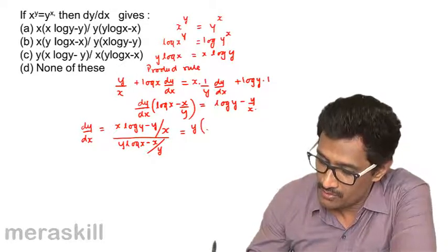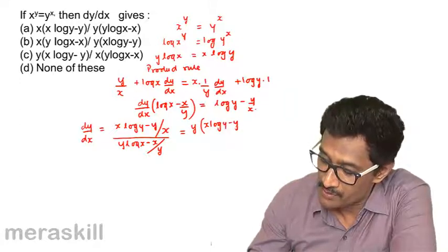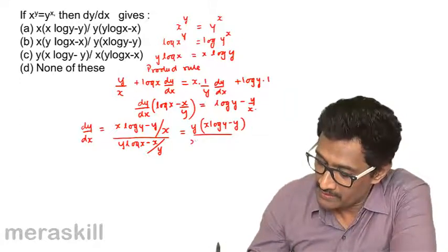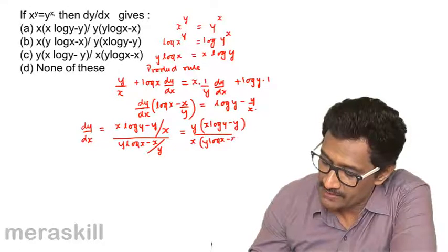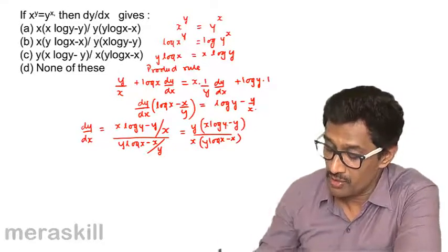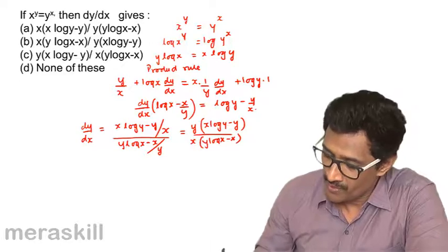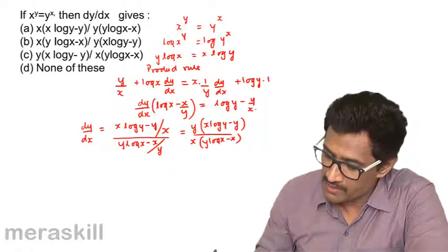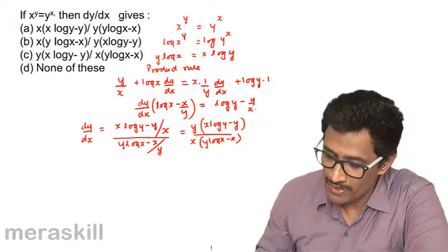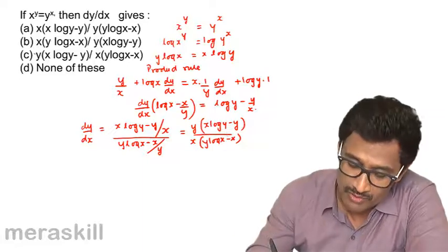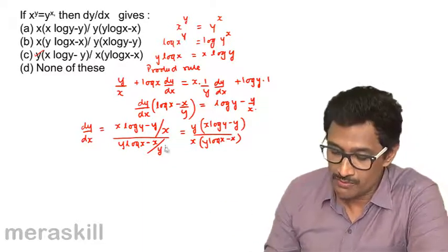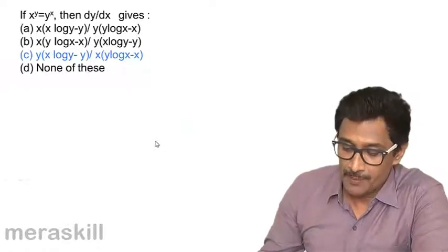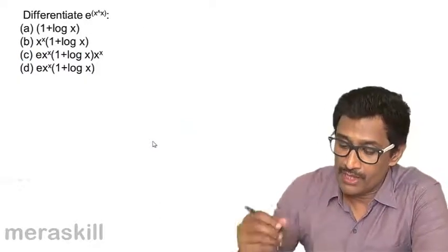Simplifying further, y goes to the top: dy/dx equals y times (x log y − y) divided by x times (y log x − x). So the answer is option C: y(x log y − y) over x(y log x − x).